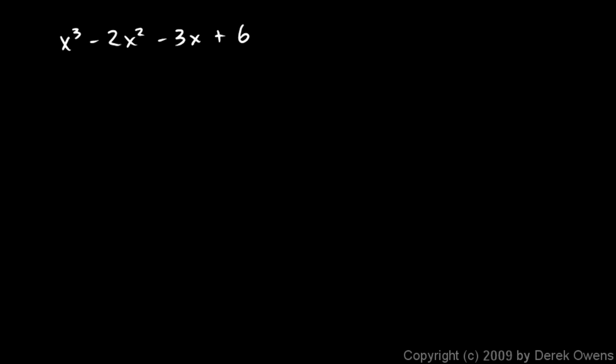Okay, now look at this: x³ - 2x² - 3x + 6. It turns out that this factors like this: (x + √3)(x - √3)(x - 2). Notice these numbers here, the square root of 3 and the negative square root of 3, those are irrational numbers.